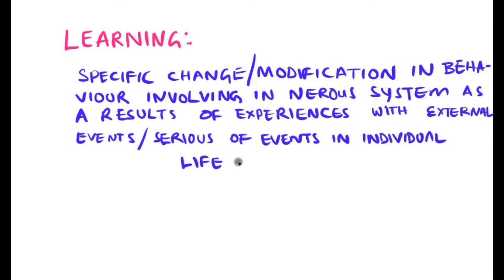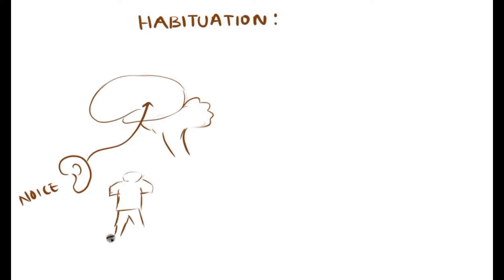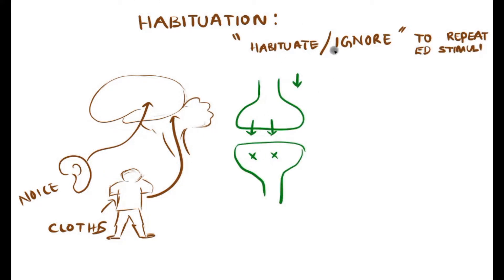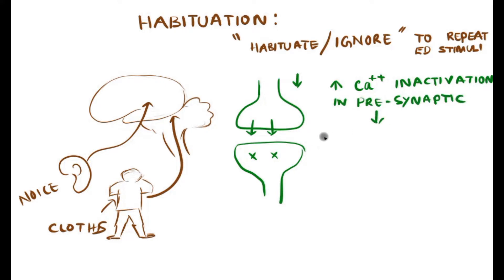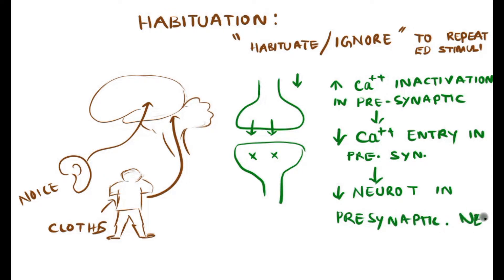Let us start with the habituation. Habituation means becoming habituated to a particular stimulus — for example, noise and awareness about wearing clothes — and we become ignorant, or neurons become ignorant, so they no longer sense information about this unwanted input. This is because inactivation of the presynaptic calcium channels leads to low availability of calcium entry in the presynaptic neuron, which leads to less neurotransmitter release in the postsynaptic neuron.